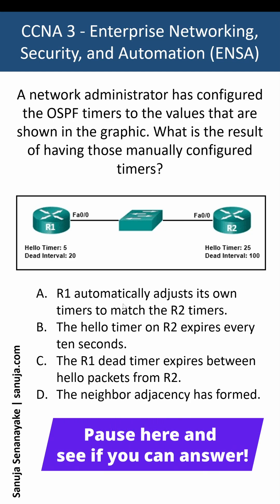What is the result of having those manually configured timers? The answer choices are: R1 automatically adjusts its own timers to match the R2 timers; the hello timer on R2 expires every 10 seconds; the R1 dead timer expires between hello packets from R2; or the neighbor adjacency has formed.